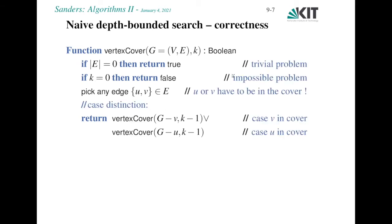Why is this correct? The base cases are trivial cases, trivially solvable and a trivially impossible problem. We are free to pick any edge. Of course, there could be heuristics for picking a particular one, but that doesn't make the algorithm incorrect. And one of these cases has to work.